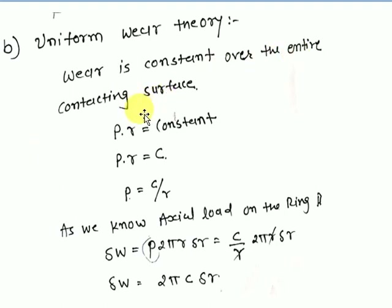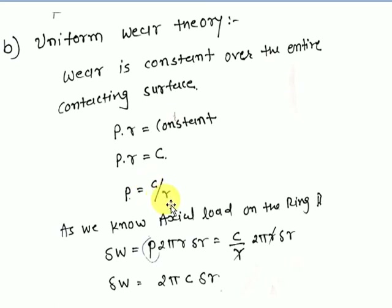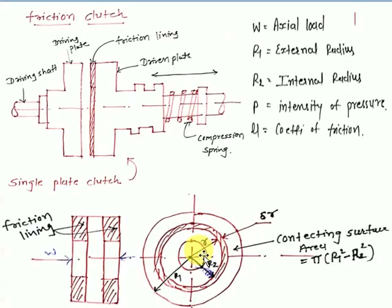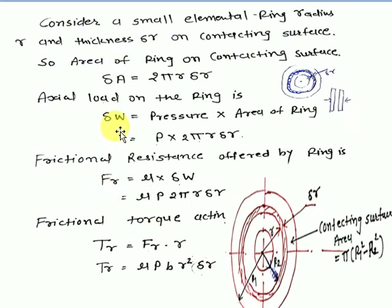For uniform wear theory, we assume p × r = constant (let's call it C), so p = C/r. Using the earlier equation δW = p × 2πr·δr, substituting p = C/r: δW = (C/r) × 2πr·δr = 2πC·δr. The r terms cancel, leaving δW = 2πC·δr.